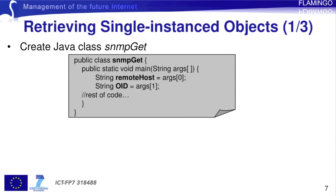Based on these steps, we now see with code snippets how single-instance objects can be retrieved. These hold scalar values and are usually used as counters. It should be noted that the identifiers of single-instance objects end with a .0. First, we create a Java class called SNMPGet, the main method of which takes two arguments of type string. The first is the address of the remote host on which the agent is running, and the second is the identifier of the object we wish to retrieve.